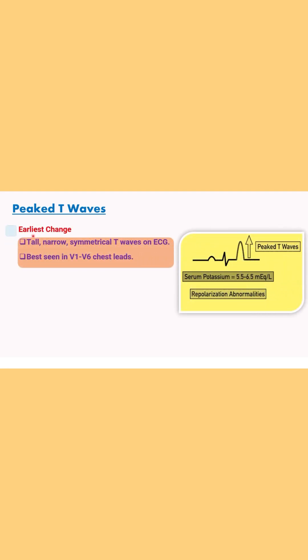So peaked T waves are the first ECG change that appears in hyperkalemia. There is presence of the tall narrow symmetrical T waves on ECG and these T waves are seen in the V1 to V6 chest leads.